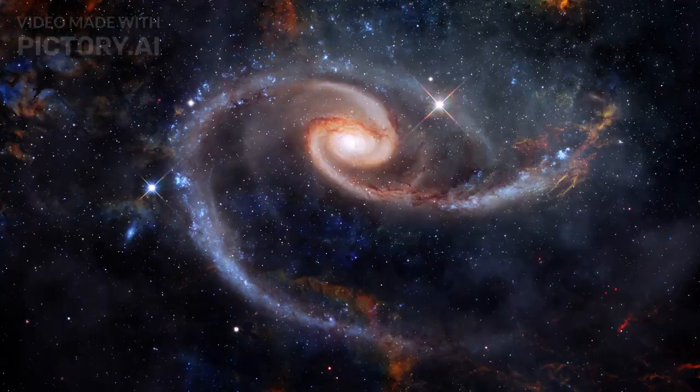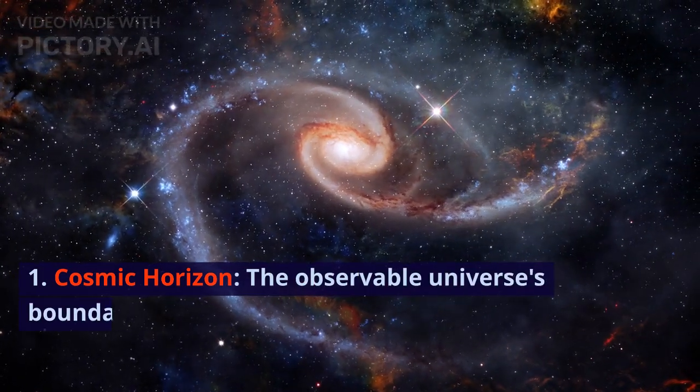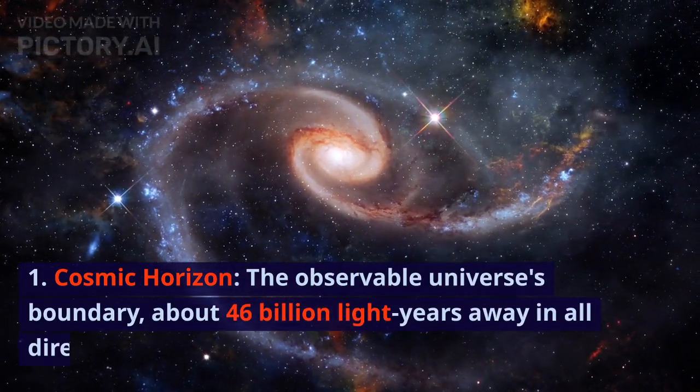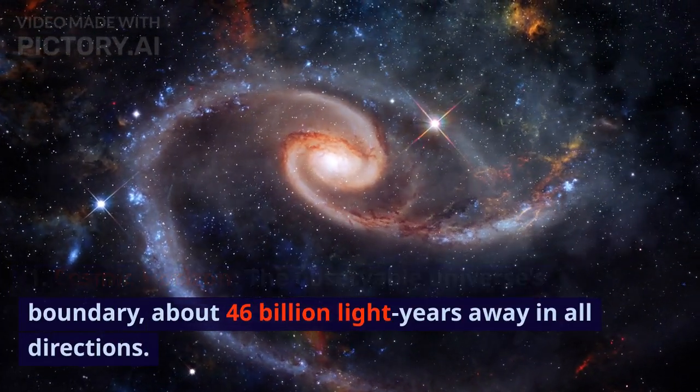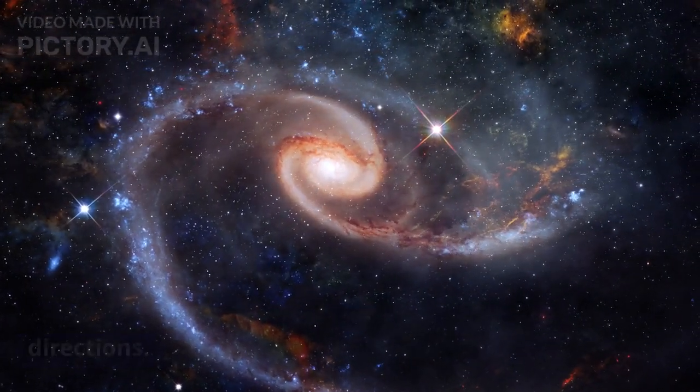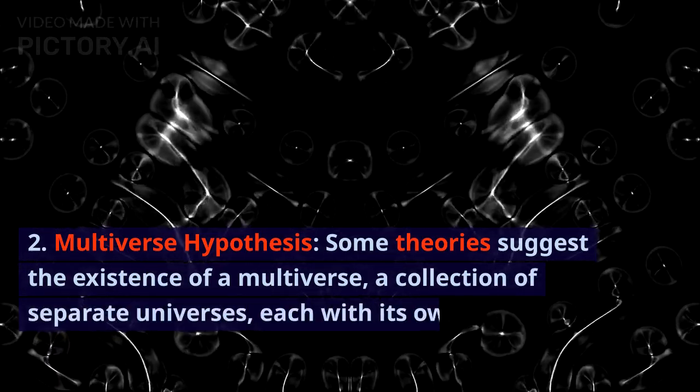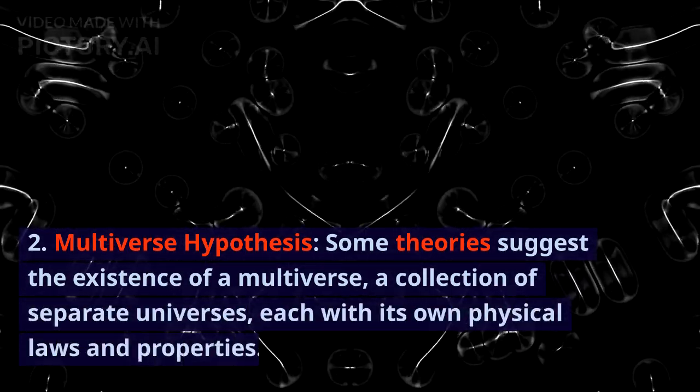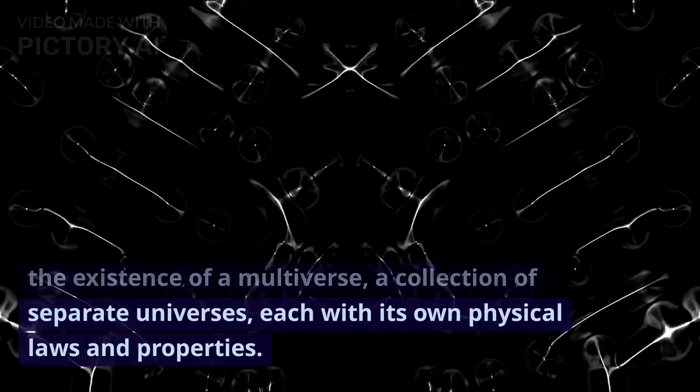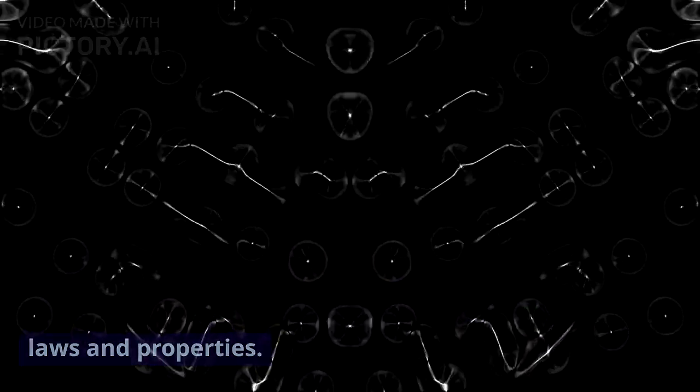Cosmological Scales: 1. Cosmic Horizon - the observable universe's boundary, about 46 billion light years away in all directions. 2. Multiverse Hypothesis - some theories suggest the existence of a multiverse, a collection of separate universes, each with its own physical laws and properties.